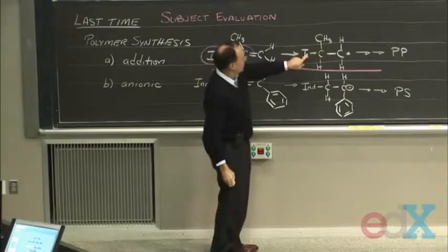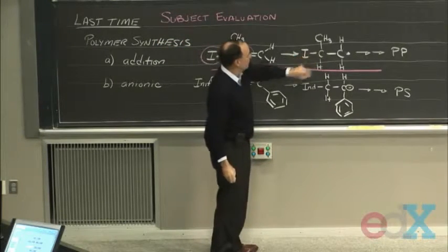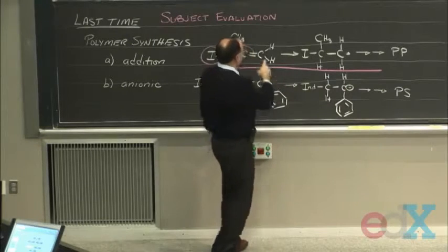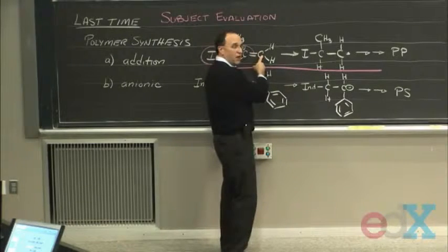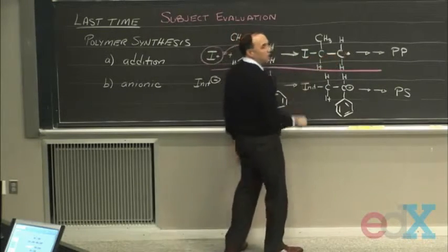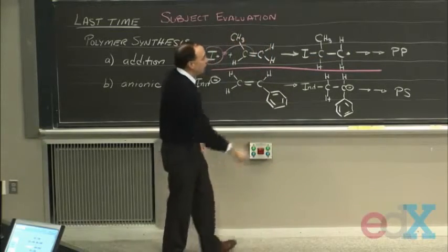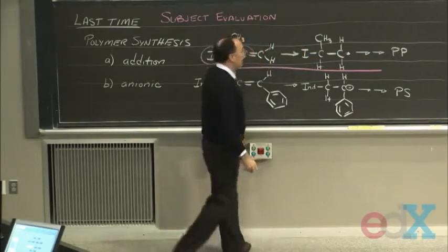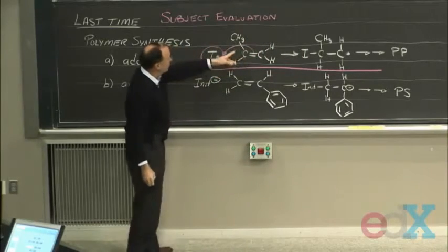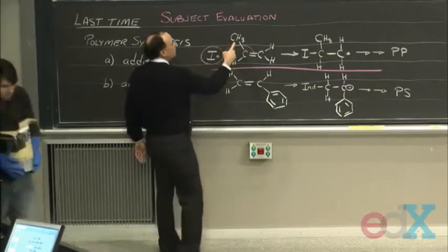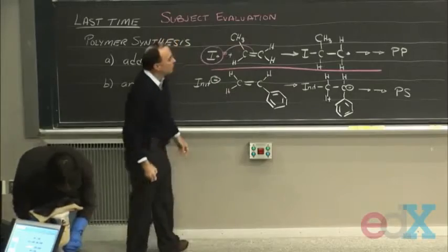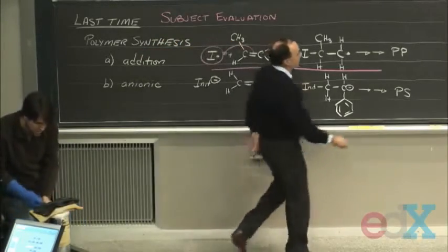So what can happen is that this double bond can flip out like that, creating a nice bond between the initiator and this carbon. But of course, this carbon is left out, right? And so it ends up being a radical. And this can keep on going. And in this case, since I'm starting with propylene, three carbons and one double bond, I end up with polypropylene.